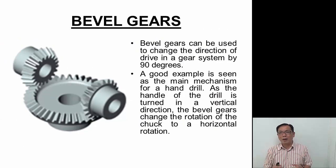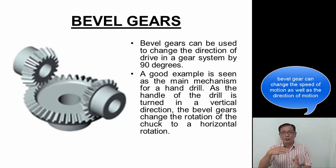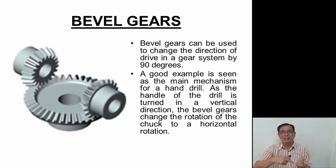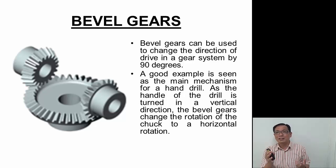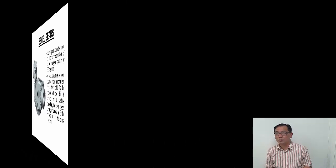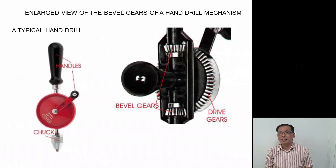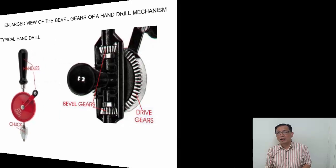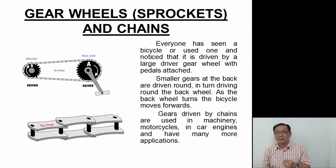Bevel gears are very interesting — the axis of rotation is changed through 90 degrees. One shaft rotates one way and the other shaft rotates the other way, converting motion through 90 degrees and also changing the shaft speed. An example of this is the manual egg beater or the typical hand drill we have in the workshop.